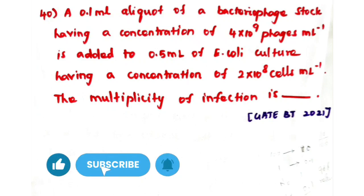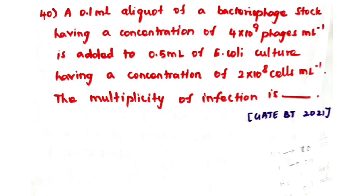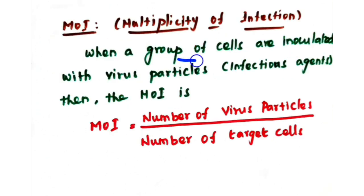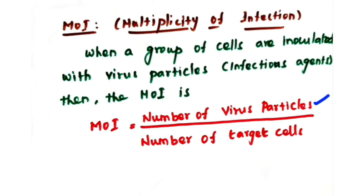In this video we are going to see how to calculate multiplicity of infection. When a group of normal cells are inoculated with virus particles or any infectious agents, the MOI — multiplicity of infection — is the number of virus particles present in your culture divided by the number of target cells. So MOI equals the ratio of number of virus particles to number of target cells.